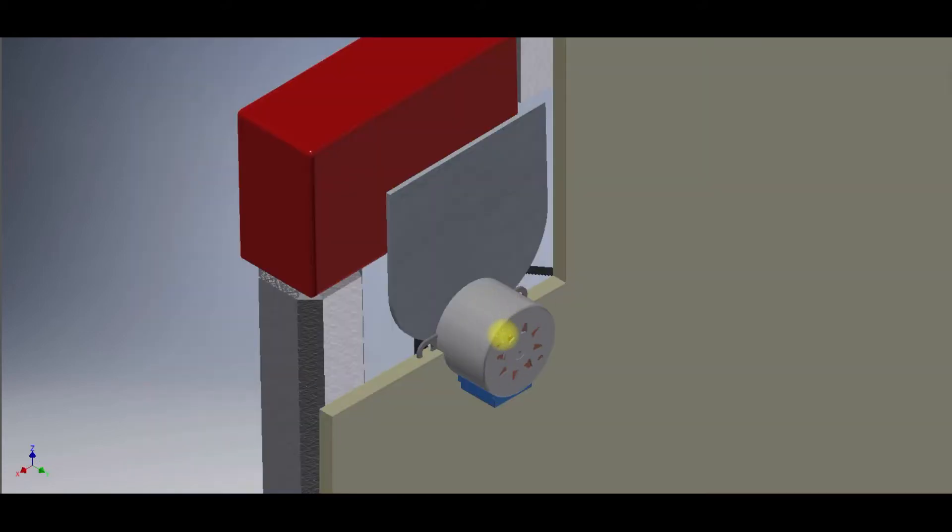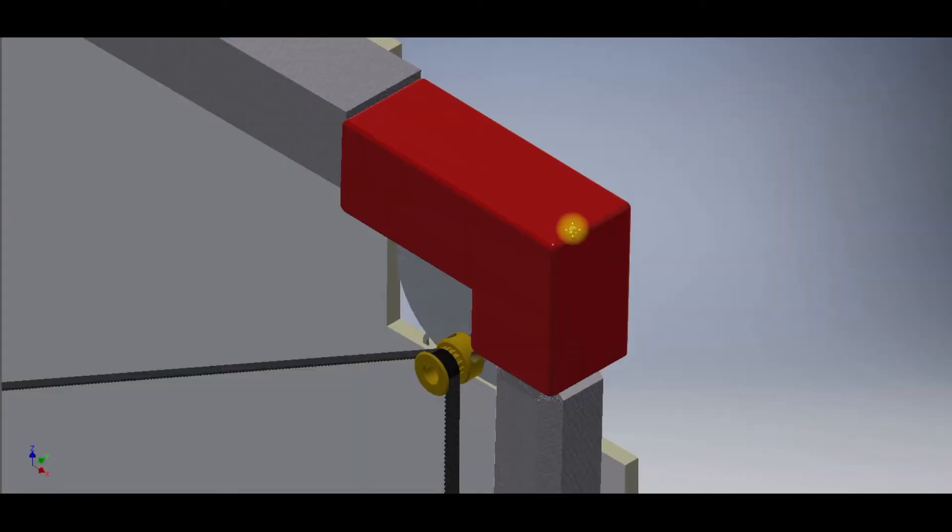This is the stepper motor. This is the actuator for moving the gondola. Stepper motors are held by motor clamp. The motor clamp in turn are held by elbow joints. Elbow joints join the vertical frame and the horizontal frame together.